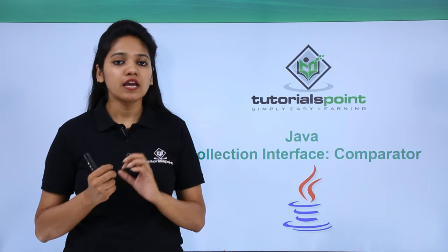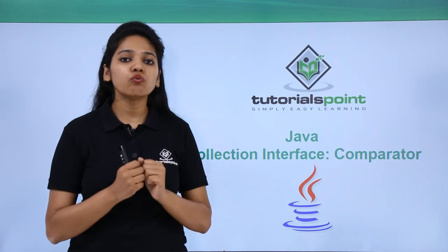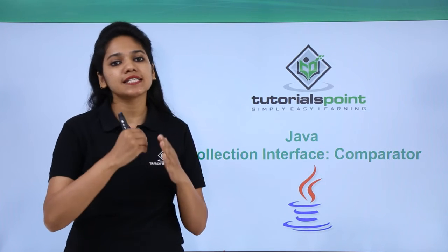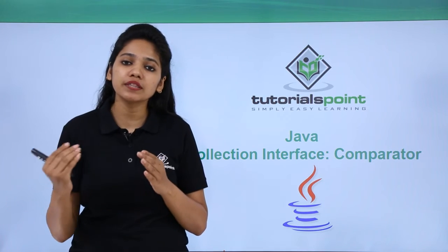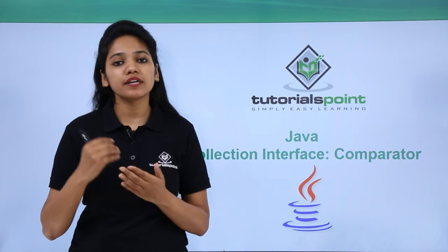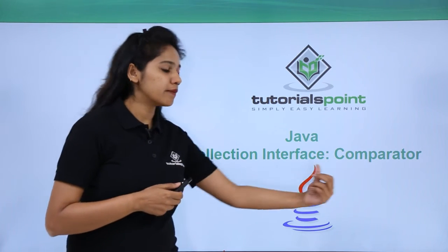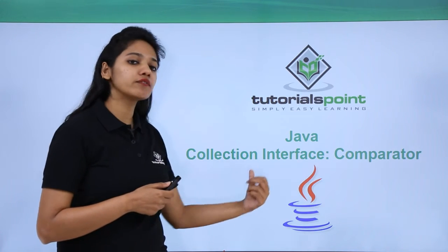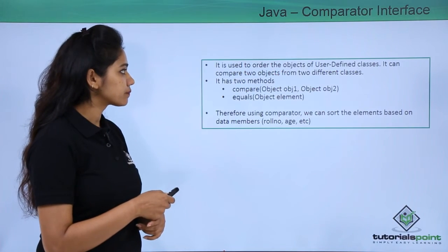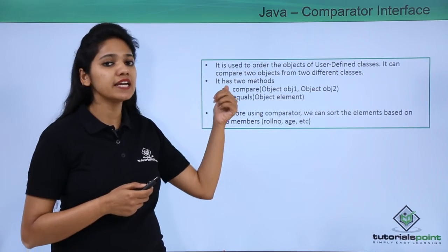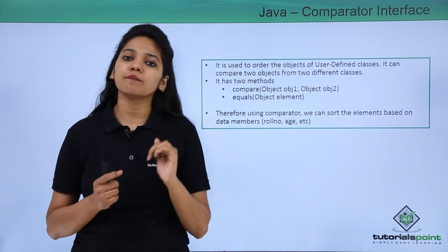Now, what if you have created certain classes and you want to compare those classes and then print the values one by one — in ascending or descending order? In those cases, you use a comparator, which is one of the collection interfaces. It is used to order the objects of user-defined classes.